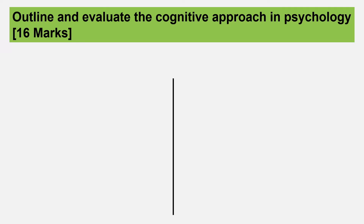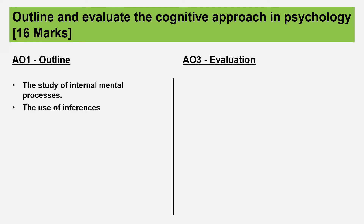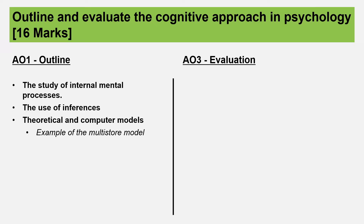So this is what we're going to do. In your outline, we're going to start by talking about the basic assumptions of the cognitive approach, which is the fact that internal mental processes can and should be studied. We're then going to move on and talk about how this generally happens through the use of inferences, because a lot of what happens can't be directly observed. We'll then explore the use of models — theoretical models and computer models — and use an example to highlight what we mean.